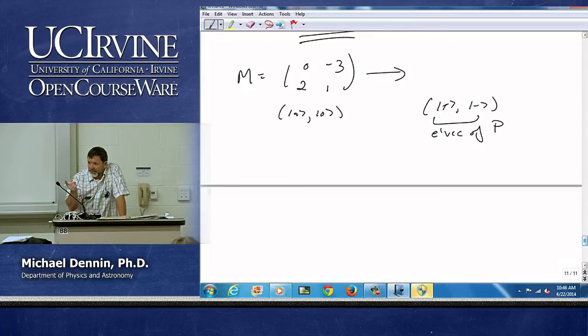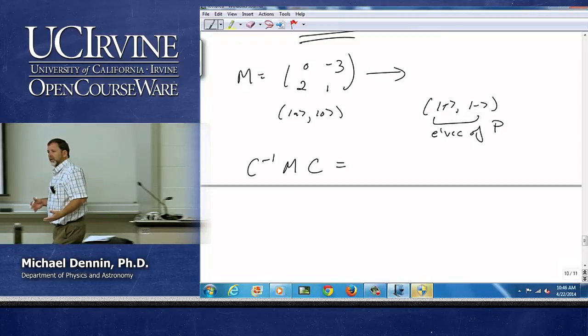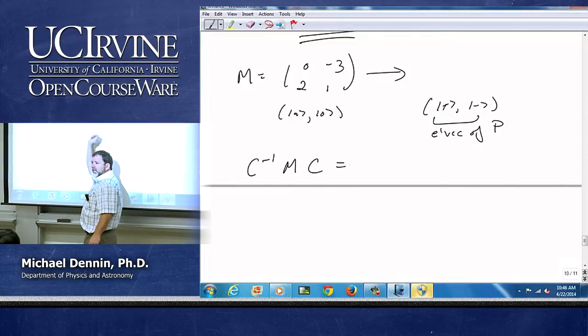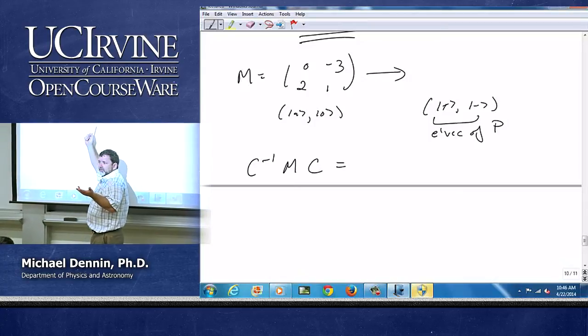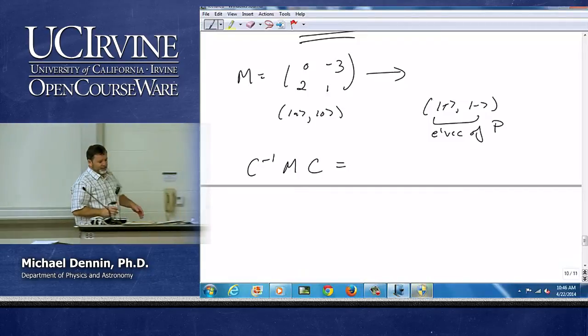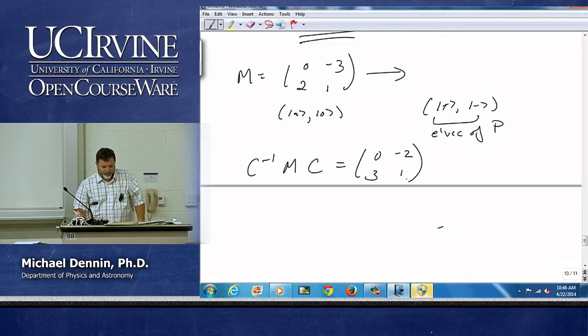Well, it turns out, I've said it before, but I knew it would have gotten lost. The concept of C inverse MC, that's how we change any matrix into the new basis, not just P. C inverse P times C was the change of basis and P turns out diagonal. But it's also the way we change any other matrix into our new basis. So you just do that multiplication out, and if you do it out, interestingly enough, you get zero minus two, three, one, if I did it correctly.